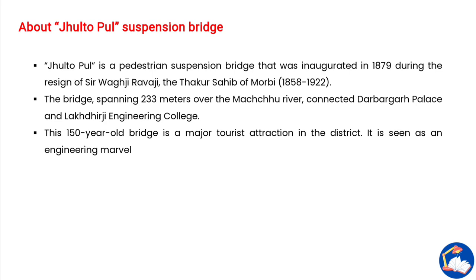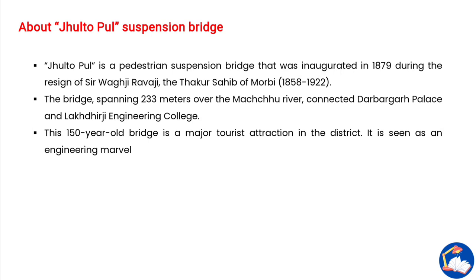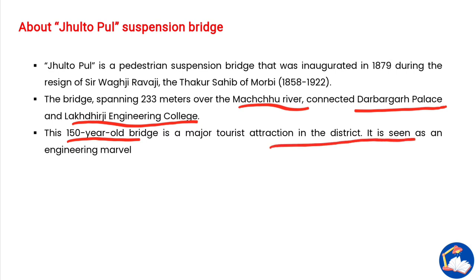The bridge's name is Jhultopul — a pedestrian suspension bridge that was inaugurated in 1879 during the reign of Sir Bogji Rawaji, the Tahakur Sahib of Morbi, in the Morbi district of Gujarat. The bridge spans 233 meters over the Machu River, connecting Darbarga Palace and Lagharji Engineering College. This 150-year-old bridge is a major tourist attraction in the district.